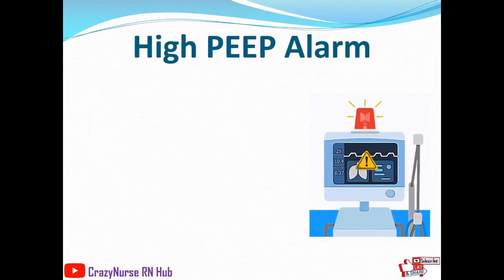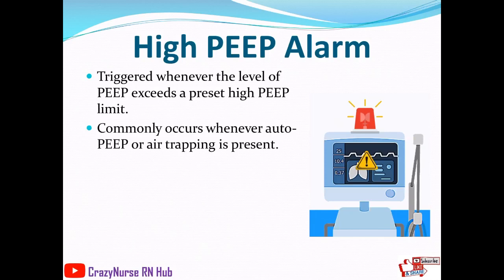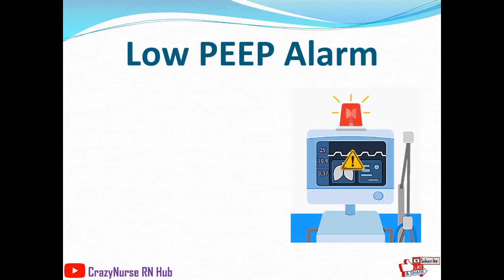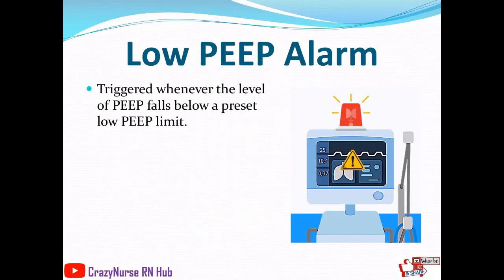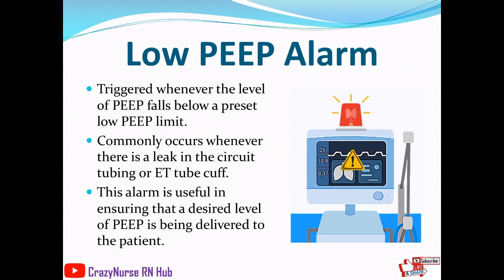The high-PEEP alarm is triggered when PEEP exceeds a preset high limit, common when auto-PEEP or air trapping is present. Auto-PEEP occurs when positive pressure remains in the alveoli at end-exhalation, increasing the work of breathing, but it can be reduced by prolonging expiratory time. The low-PEEP alarm is triggered when PEEP falls below a preset low limit, common with a leak in the circuit tubing or ET tube cuff, and is useful in ensuring the desired PEEP level is being delivered.